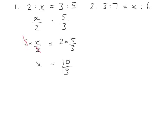Looking at another one, we want to rewrite the two ratios as fractions. This time x is on the left hand side of the ratio, so we'll choose to write the left hand quantity x divided by the right hand quantity 6. And the same on the other side: the left hand quantity 3 divided by the right hand quantity 7.